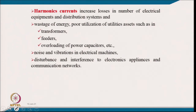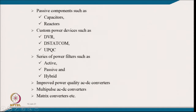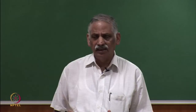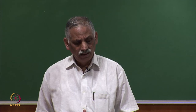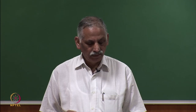Regarding classification of mitigation techniques for power quality problems: earlier, passive components like capacitors and reactors were used for reactive power compensation and negative sequence current compensation. Power quality improvement devices now include DVR — Dynamic Voltage Restorer — D-STATCOM, and UPQC. A series of power filters includes active, passive, hybrid, and improved power quality AC-DC converters with power factor correction at the input. For large-rating drives in the megawatt range, multi-pulse AC-DC converters or matrix converters are used at the input.